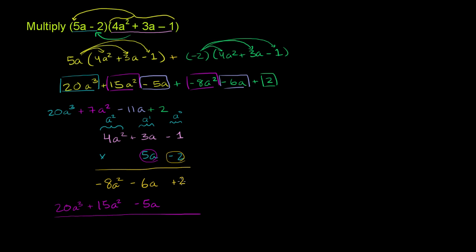Now we add it all up. The constant: 2. The a terms: negative 6a minus 5a is negative 11a. The a squared terms: negative 8a squared plus 15a squared is 7a squared. And then 20a to the third. We get the exact same answer because we really just did the same thing written in a different way.